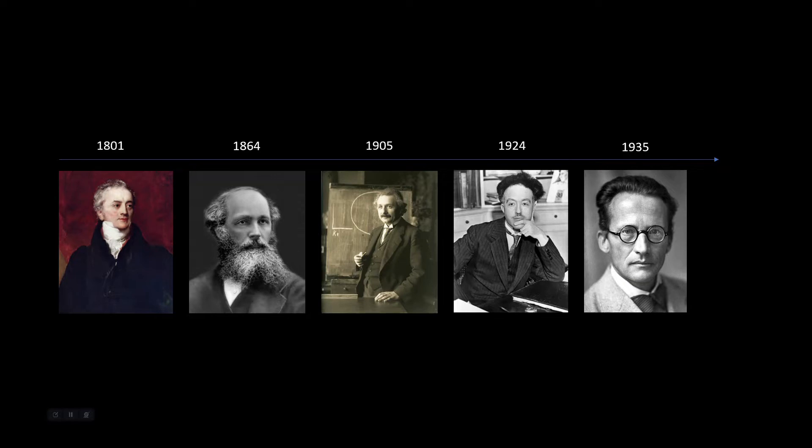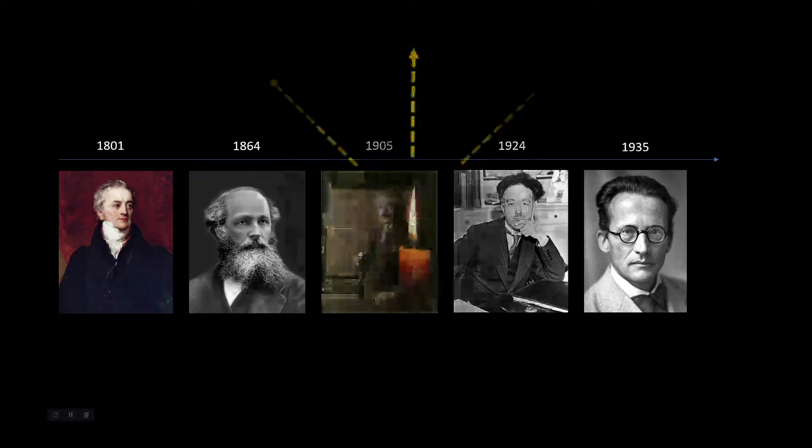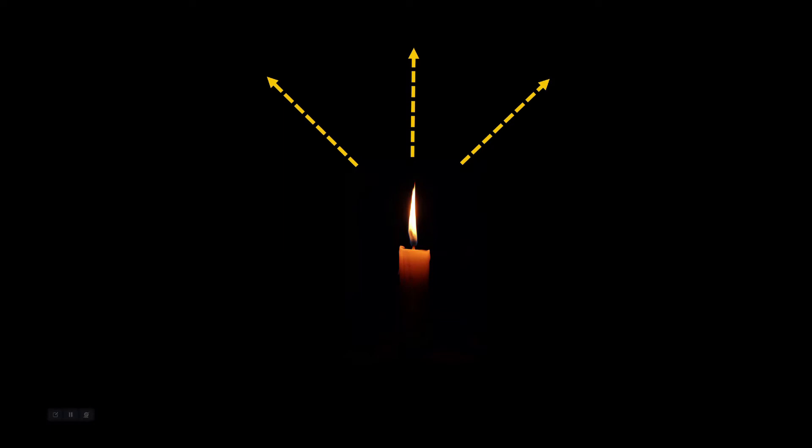For this, we will have to go back all the way to the 1700s where light was predominantly thought to be part of the corpuscular theory. What this meant was that light was made up of small discrete particles traveling in a straight line. This was firmly believed by Isaac Newton himself.